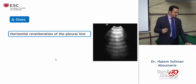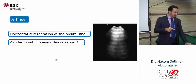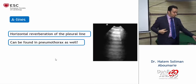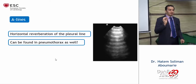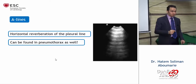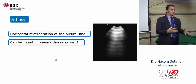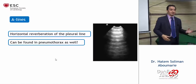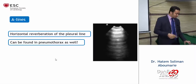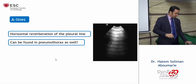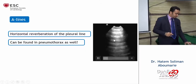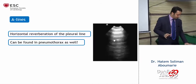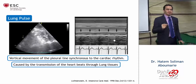Here is another example of A-lines using the cardiac probe. When we examine each sector and find A-lines, we can tell there is no pulmonary congestion or extravascular lung water — whether from hydrostatic pulmonary edema in heart failure or non-cardiogenic pulmonary edema like ARDS. A-lines must be at equal distance from each other; they are mirror-shaped artifacts in physics terms.